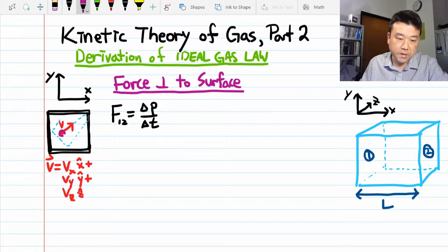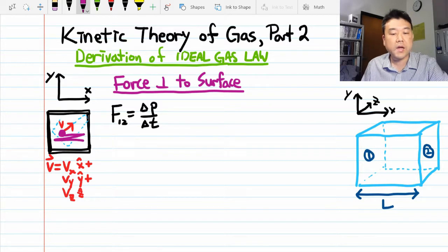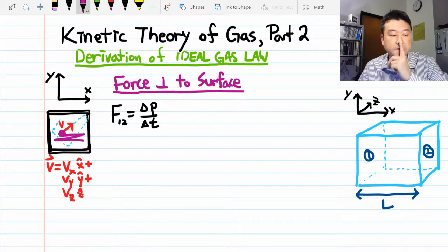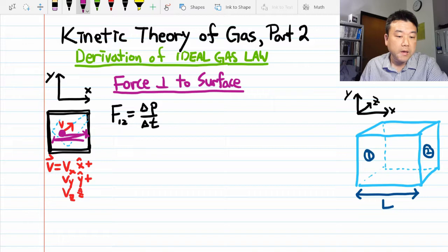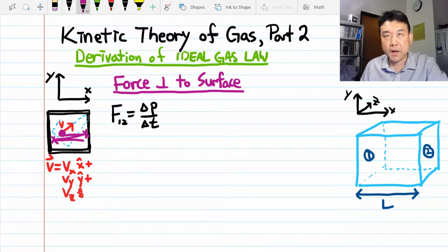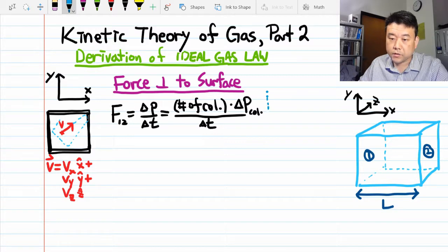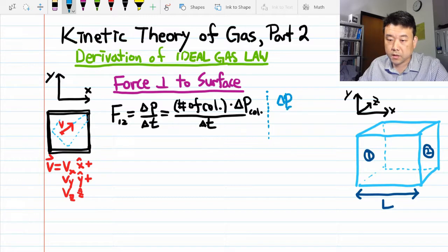So if I'm imagining how this gas particle is bouncing back and forth, to describe the total amount of momentum delivered, I can do it this way. If I know how much momentum was delivered per each collision and multiplied by number of collisions divided by amount of time for that number of collisions.